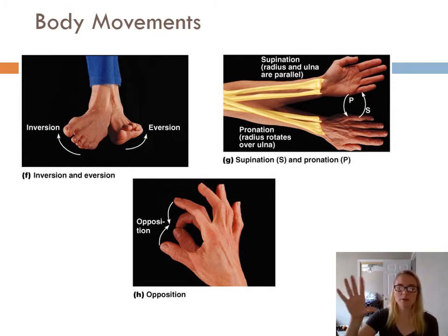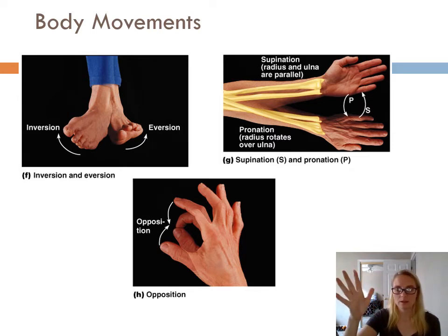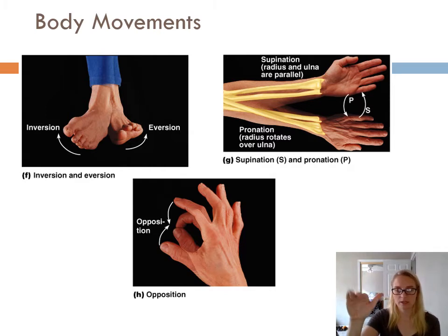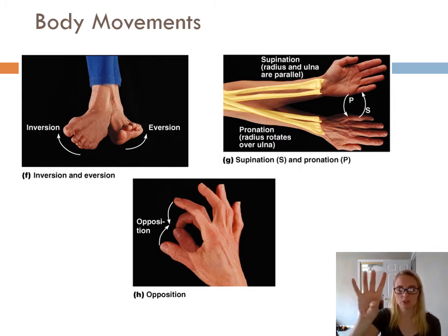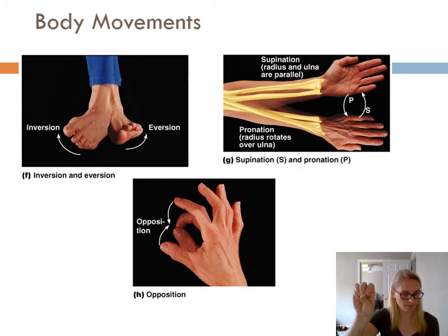The next one deals with the thumb only. We have flexion and extension, and we can do abduction and adduction. But when we use the thumb to touch our fingertips, this is called opposition — opposable thumbs, if you've ever heard that term before.